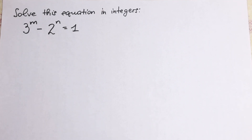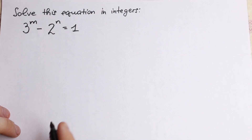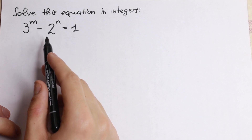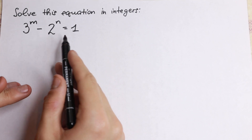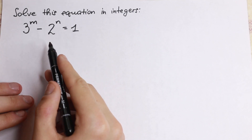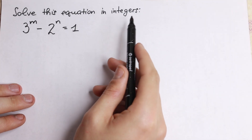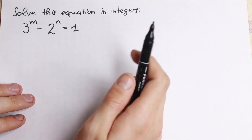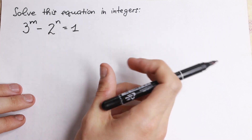Hello everyone and welcome back to High Mathematics. Really interesting algebra problem today. We have 3 to the power m minus 2 to the n equal to 1, and we need to find the integer solutions. So m and n are integer solutions.